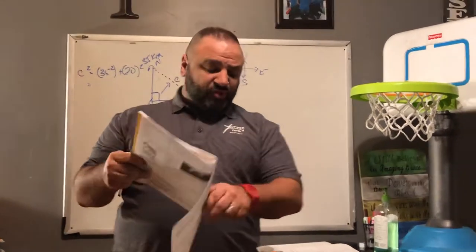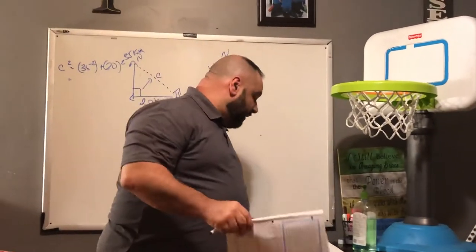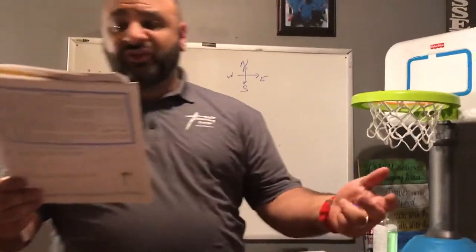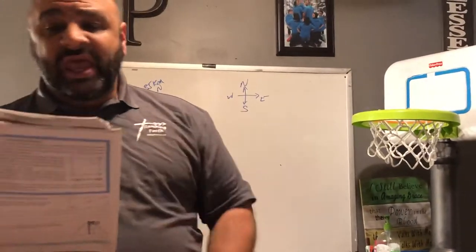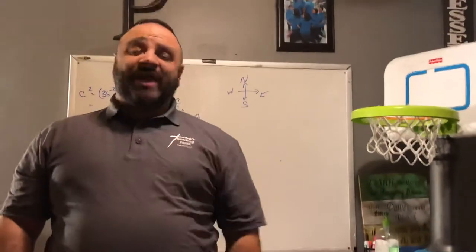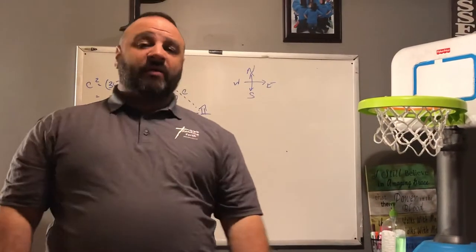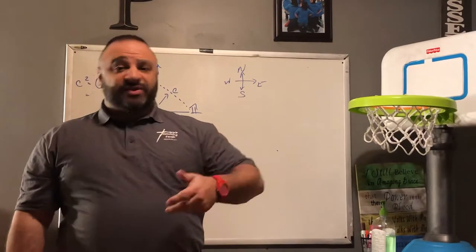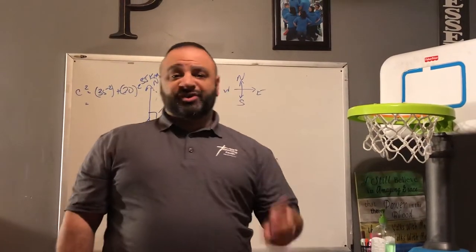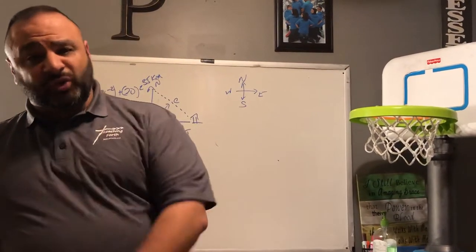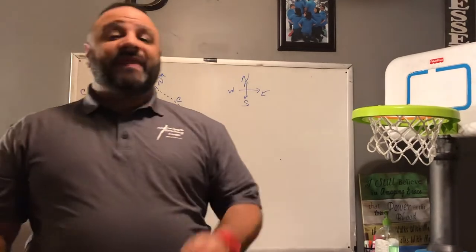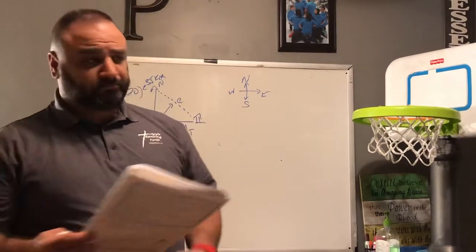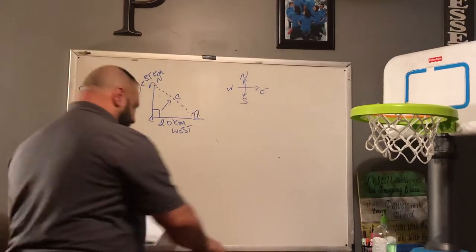Turn to page 21. Last night for homework you had to do the evens — this was the converse of the Pythagorean theorem. The converse simply states: if the square of the hypotenuse equals the sum of the squares of the other two legs, then we have a right triangle.